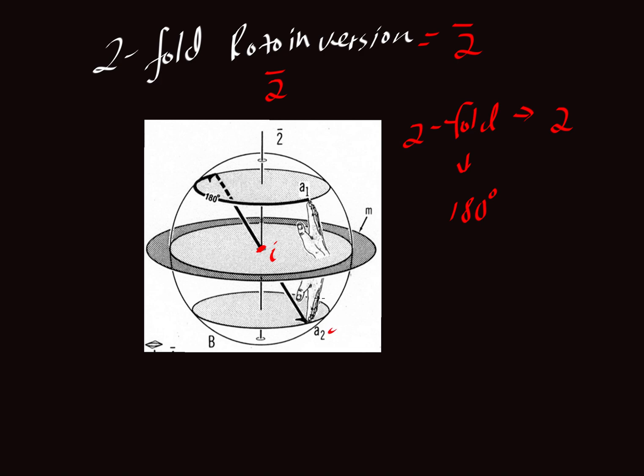Now, you'll notice that if we do the same operation on this hand here, if we rotate it 180 degrees, we end up with another hand here. Although, in that case, it's still not a bar two. We'd have to invert it through this point to complete the bar two operation. And when we do that, we'd end up with the same one we started with.